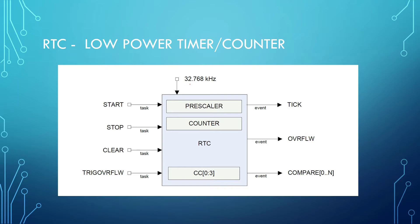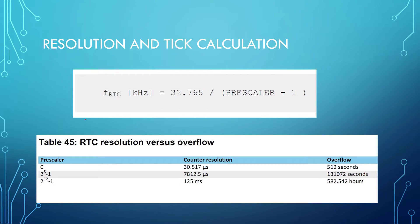The RTC uses a 32.768 kHz low power clock. We can use the prescaler register to scale down the clock tick events. The RTC can generate three types of events: the tick event (from the prescaler), a comparison event, and an overflow event. To calculate tick events, use the formula: 32768 divided by (prescaler + 1). With no prescaler, the finest resolution is 30.517 microseconds.